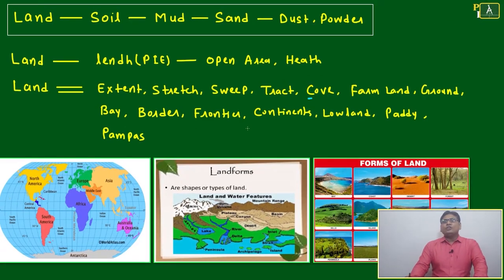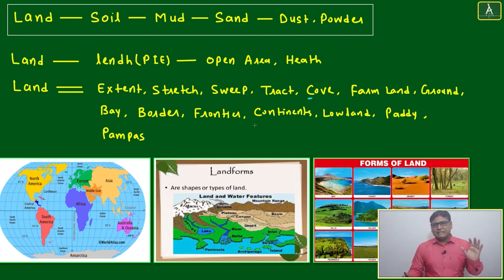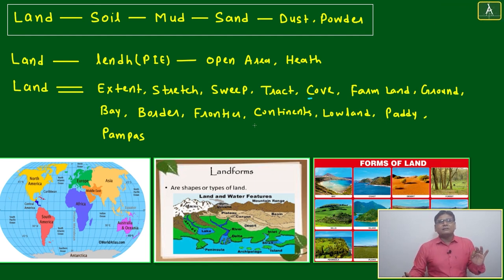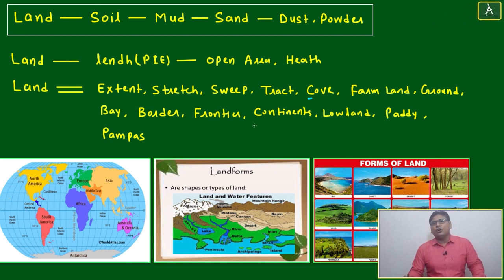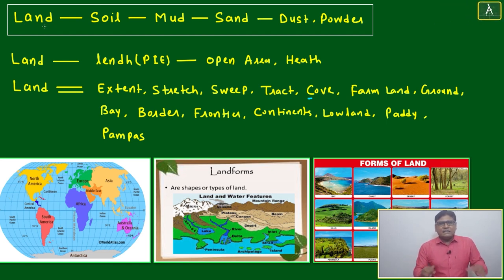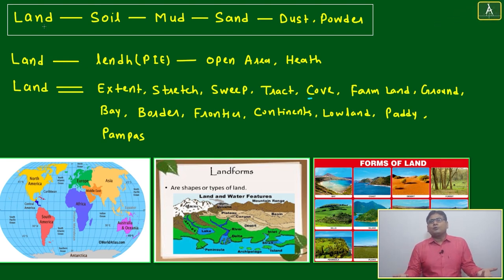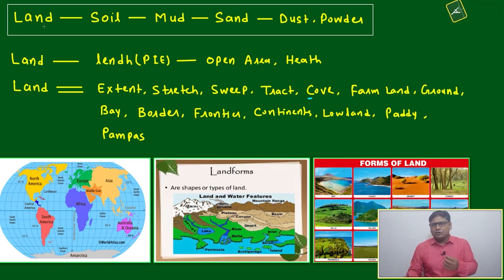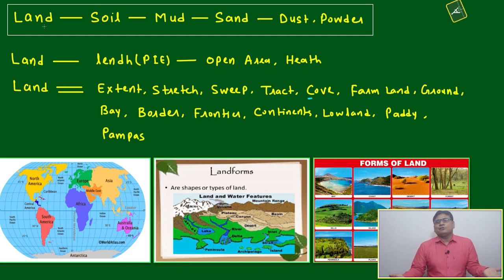Welcome to another non-living thing — landmass. We have discussed about the mountain, we have discussed about the water, and now we are discussing about the land. This is your third visual non-living thing. Once you come to the earth's surface — land — it is a general terminology. Whatever is visible that is not a water body is called land. A common definition: where water is not there, that is land.